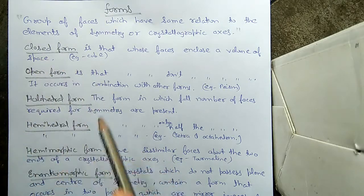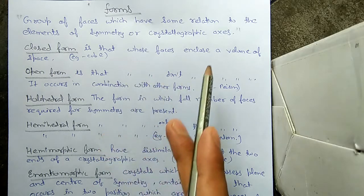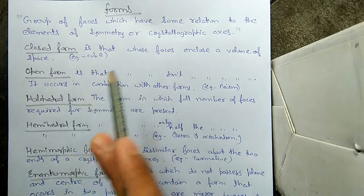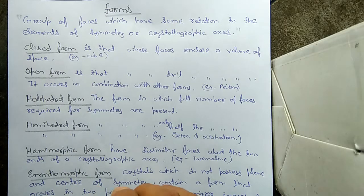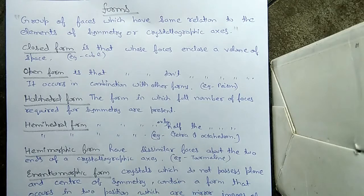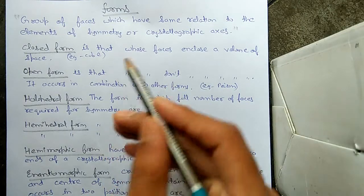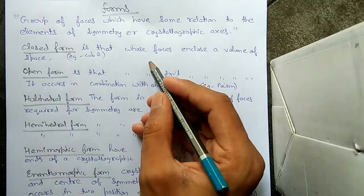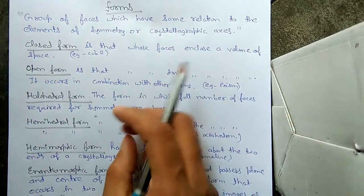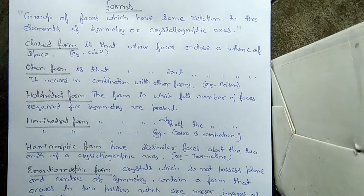The first one is the closed form. As the name suggests, a closed form is one whose faces enclose a volume of space. The faces enclose a volume. Suppose there are 3, 4, or 6 faces — a cube has 6 faces and it encloses a space. So a cube is an example of a closed form.